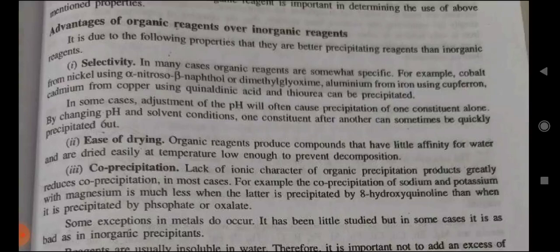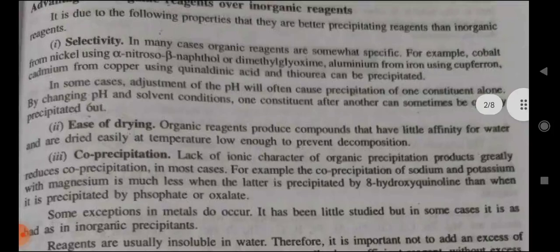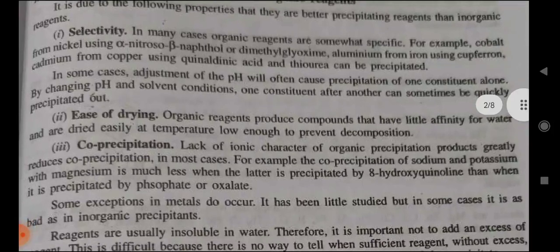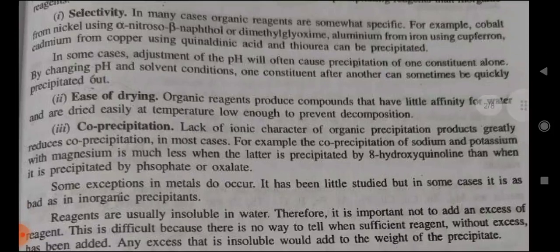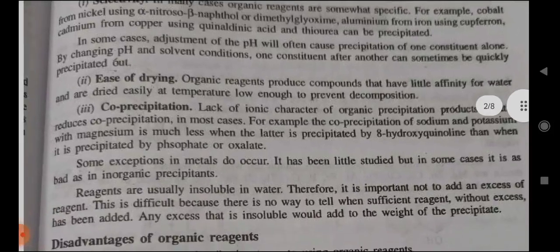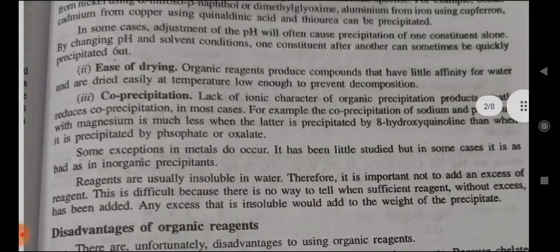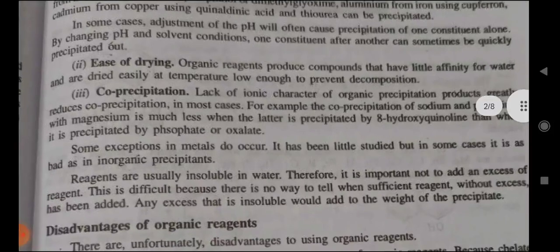Third, co-precipitation: lack of ionic character of organic precipitate products greatly reduces co-precipitation in most cases. For example, the co-precipitation of sodium and potassium with magnesium is much less when magnesium is precipitated by 8-hydroxyquinoline than when it is precipitated by phosphate or oxalate. Some exceptions in metals do occur. Second, easy drying: organic reagents produce compounds that have little affinity for water and are dried easily at temperatures enough to prevent decomposition.